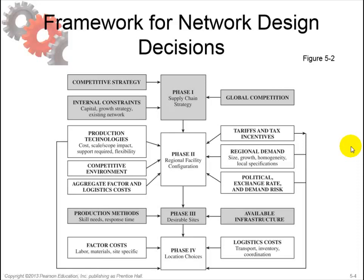The second phase is to define the regional facility configuration. The objective is to identify regions where facilities will be located and their potential roles — which could be manufacturing, retail, distribution, or storage. An analysis of phase 2 starts with a forecast of demand by country or region. This forecast must include a measure of the size of demand and a determination of the homogeneity or variability of customer requirements across regions.